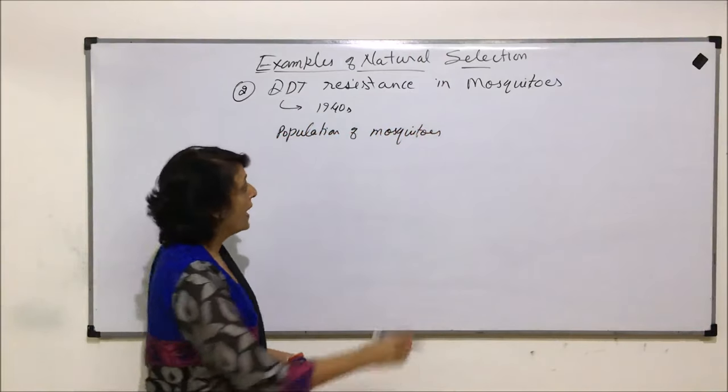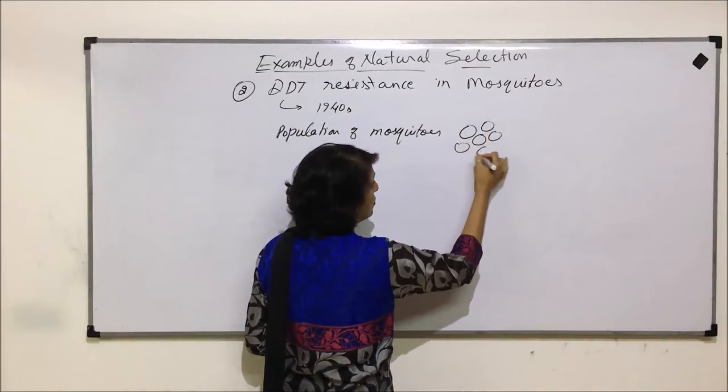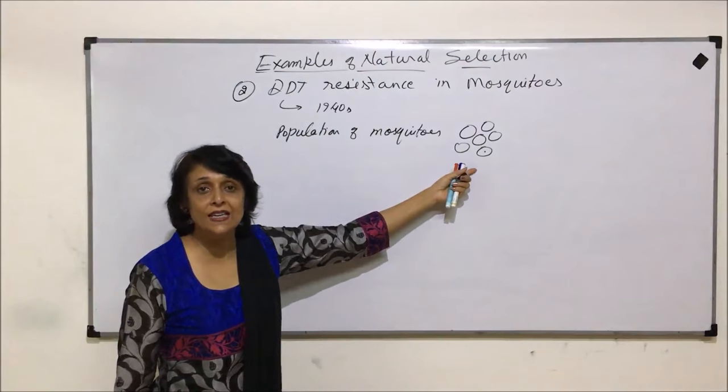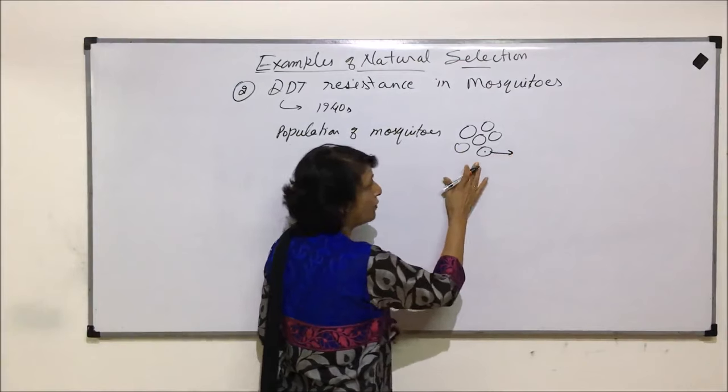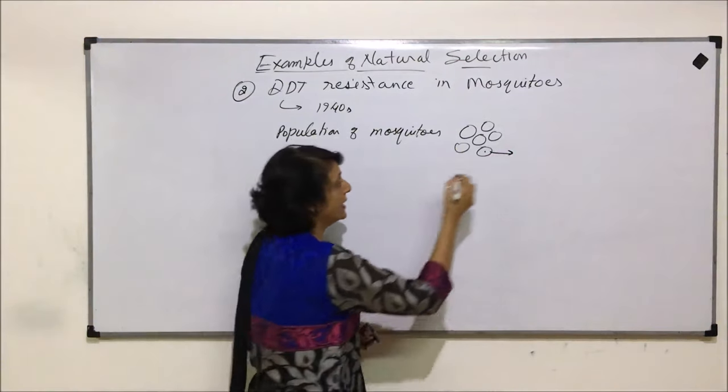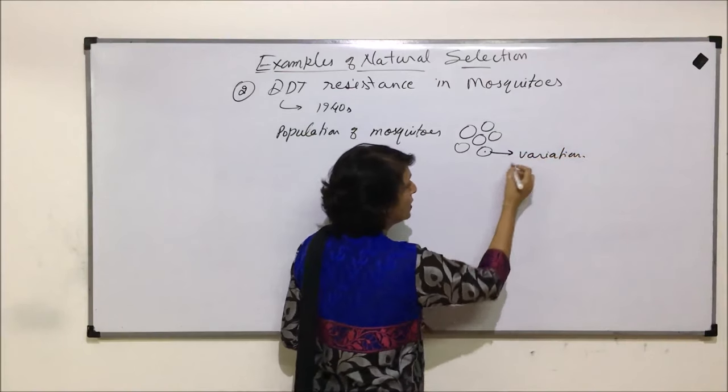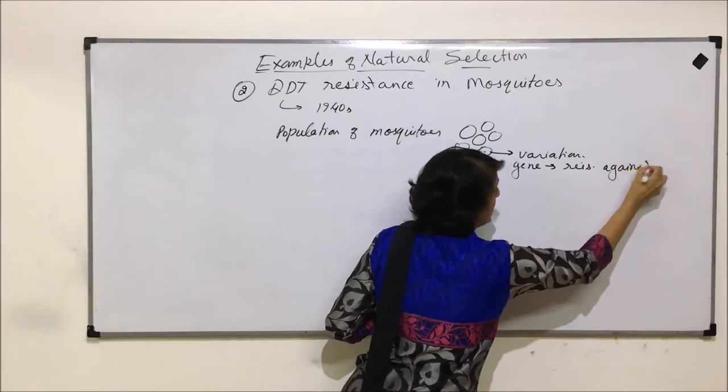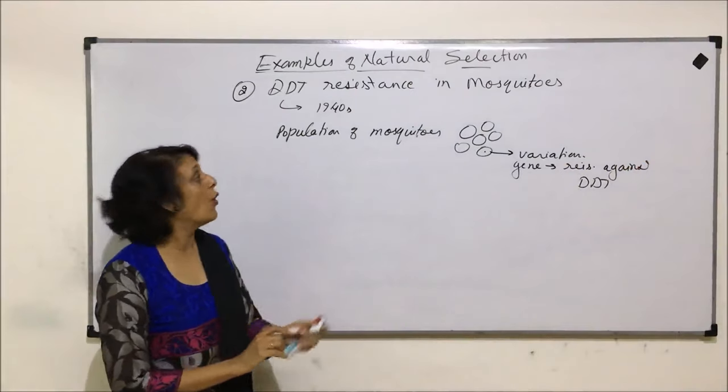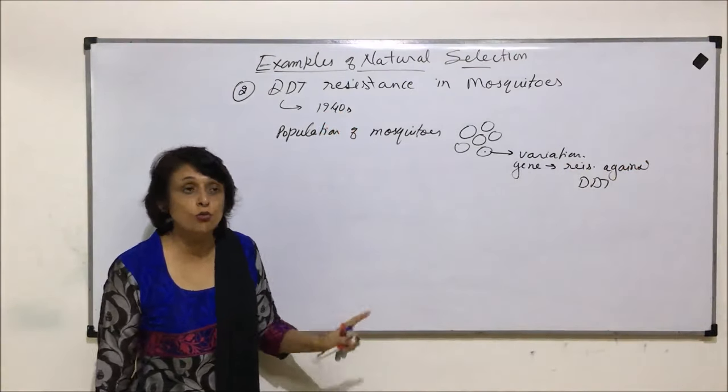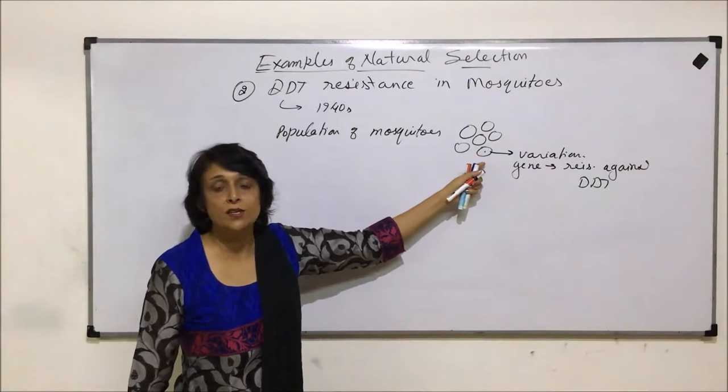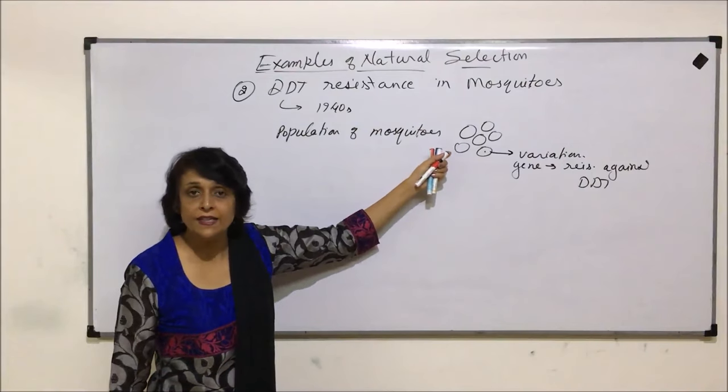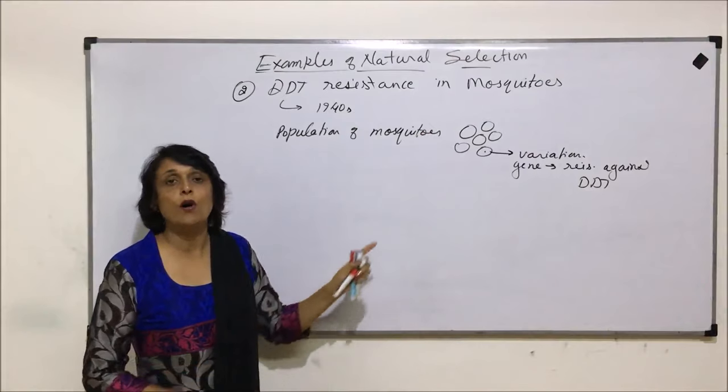These all were the mosquitoes and a few mosquitoes had a variation, and that variation was a gene resistant to DDT. This variety of organisms which existed showed variation - a gene that provided them resistance against DDT. When the situation was before 1940s, when DDT was not in use, these variation-containing mosquitoes did not get any advantage, so they were exactly same as the other varieties as DDT was not available in that environment.